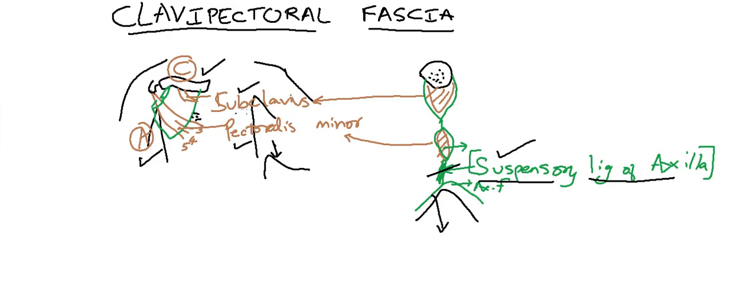The Clavipectoral Fascia is pierced by 3 structures mainly. They are called VAN structures. One vein, one artery and one nerve. Which is the vein? The vein is cephalic vein, the vein which passes through the lateral border of the upper limb. The vein pierces the clavipectoral fascia to end in subclavian vein. It is called cephalic vein. It may also end in axillary vein.